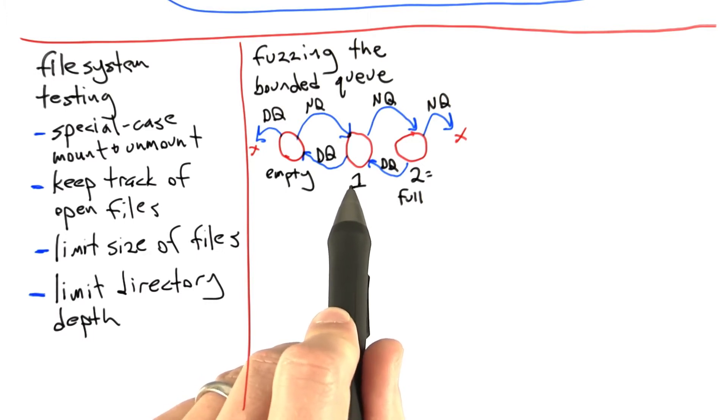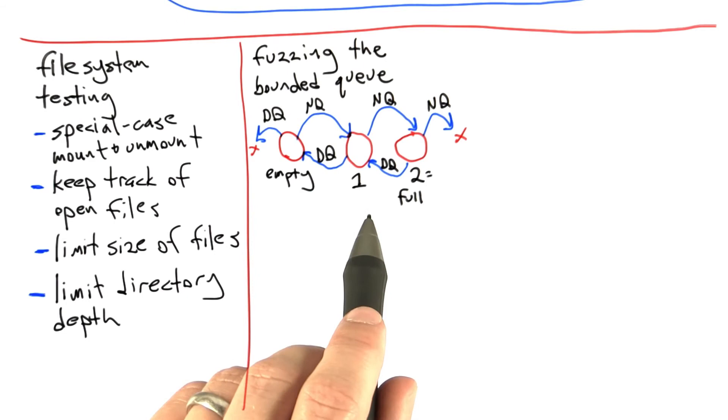And so here, probably the most interesting cases are dequeuing from an empty queue, enqueuing to a full queue, and then walking around the rest of the state space.